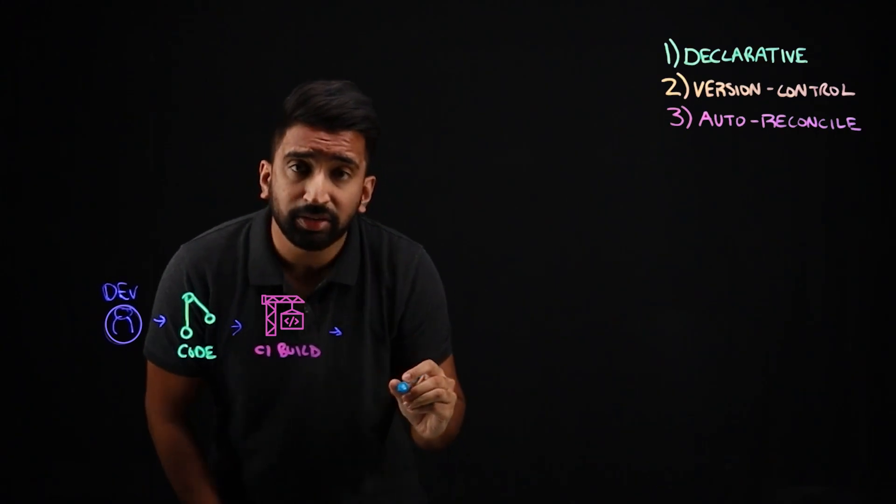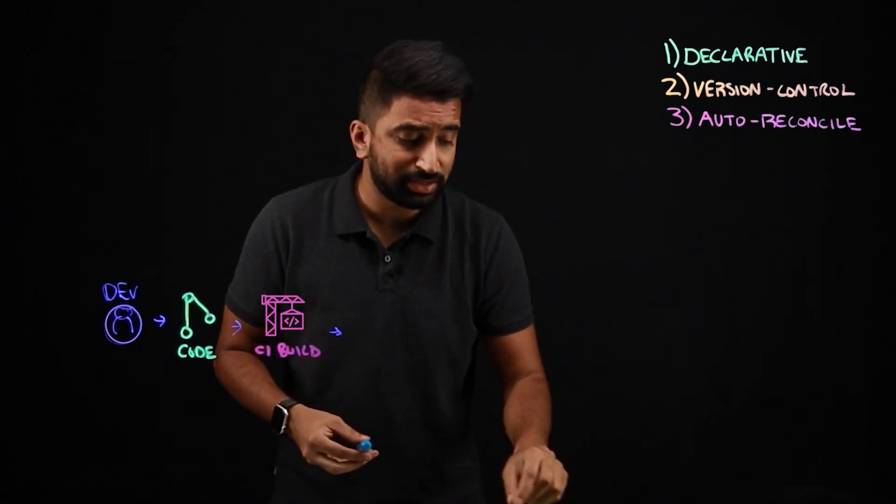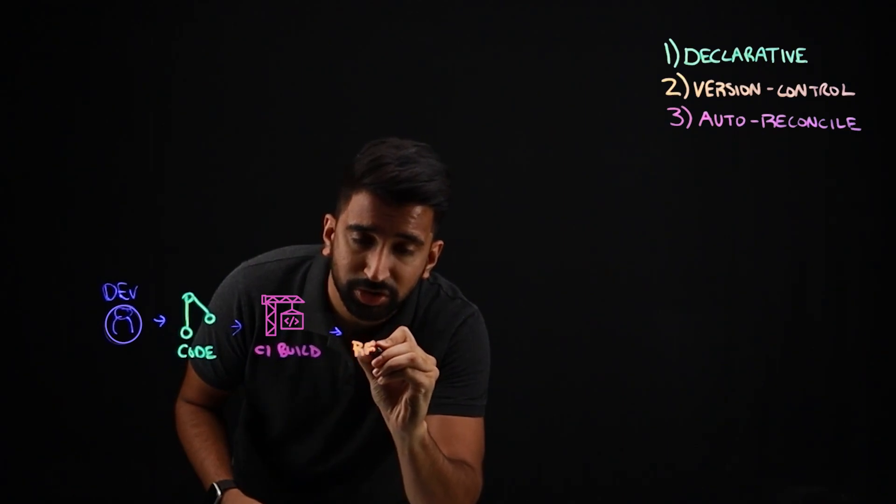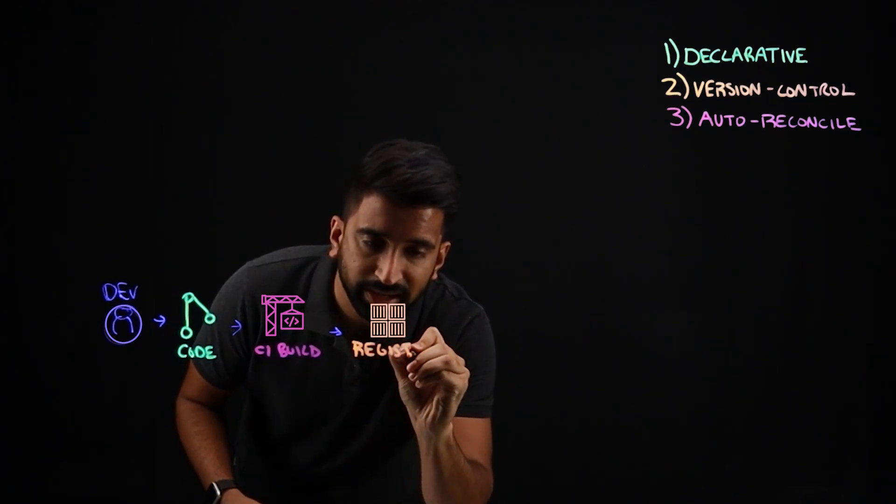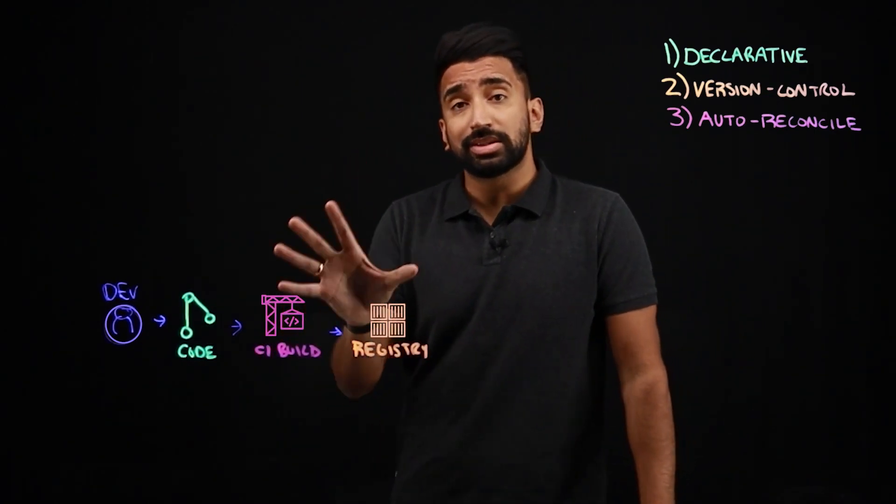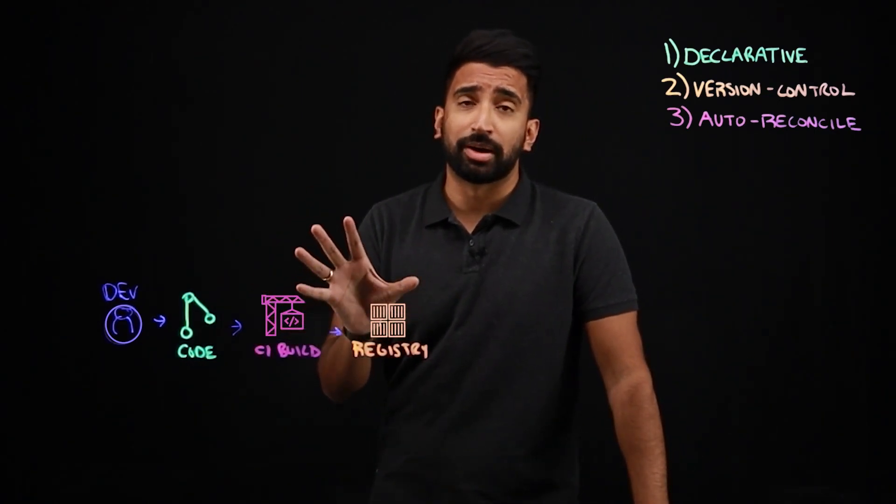So what we really want is a container image in a registry. So that's really the last piece of the puzzle here. Let's say that this puts this in a registry, maybe something like ECR, Elastic Container Registry on AWS. So this is the scope of the CI portion of our build.